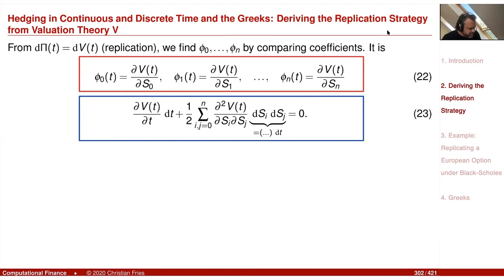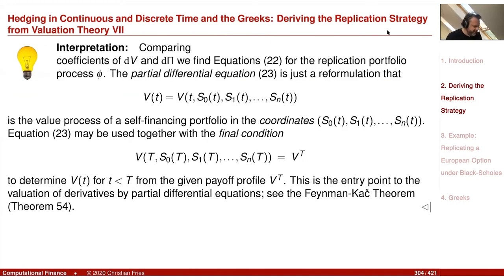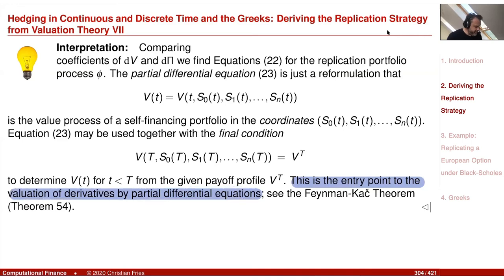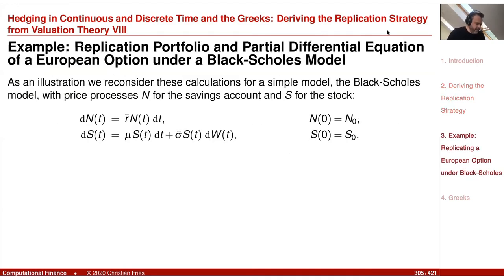If you remove the dt, you get a partial differential equation — very similar to what we saw with the Feynman-Kac theorem. You can also use this PDE to solve for V, since you know the terminal condition: V at capital T is your payoff function. As a remark, you can use this PDE to perform valuation as well. Now let's have a small example: the Black-Scholes model and the replication portfolio for valuation of a call option.